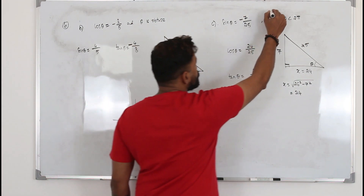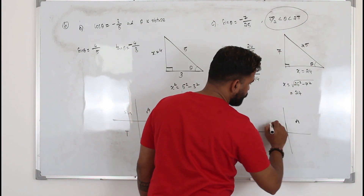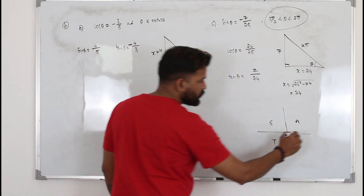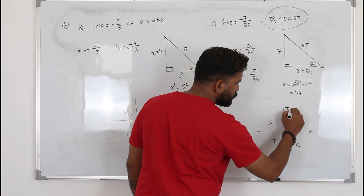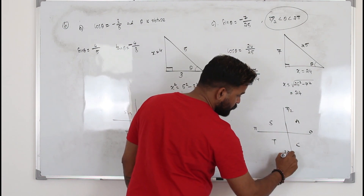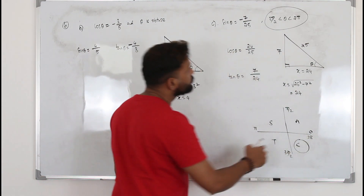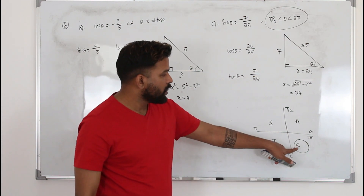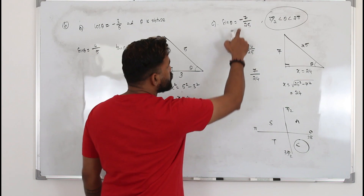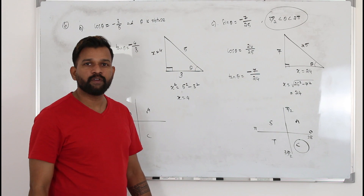For the other problem, also use the ASTC diagram. The interval 3π/2 to 2π is the fourth quadrant. In the fourth quadrant, only cos θ is positive, so sine and tan should be negative. Draw a right-angle triangle, find the missing side using Pythagoras (x = 24), then cos θ = adjacent/hypotenuse and tan θ = opposite/adjacent, applying the correct signs from the ASTC diagram.